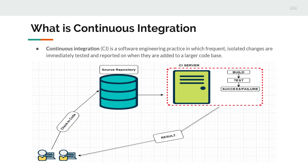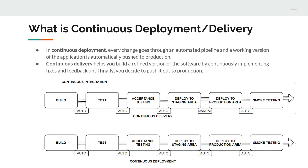The next thing is continuous deployment and continuous delivery. People are always confused between these two definitions — many people use continuous deployment and call it continuous delivery, and many teams use continuous delivery and still call it continuous deployment. These two are completely different processes.